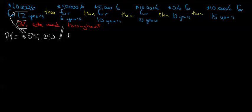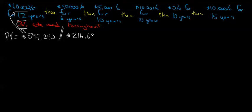Then we keep going to the next period. The present value at that twelfth year is going to be two hundred and sixteen thousand six hundred and eighty-eight dollars, meaning that if you had two hundred and sixteen thousand six hundred and eighty-eight dollars at a 3% discount rate you could provide forty thousand dollars of income for six years — you would be able to meet that obligation.